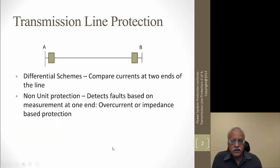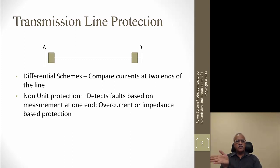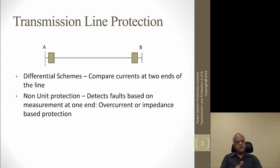There are other current-based schemes called non-unit protections. Instead of exchanging information between two ends like a differential scheme, here we look at the magnitude of the current going in. If there is a short circuit, the current increases and you can make a decision based on that. In an interconnected network, you can look at the direction and magnitude of the phase current — these are called directional overcurrent relays.